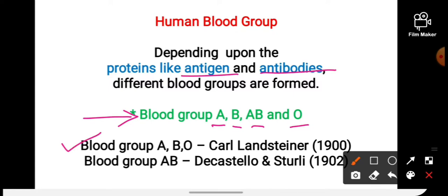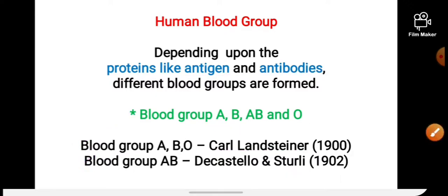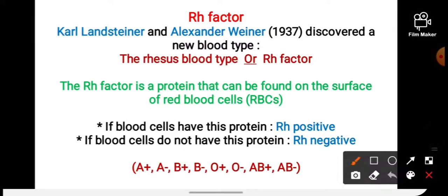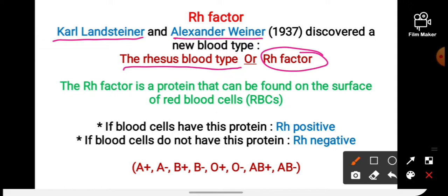The discovery of blood group AB was made by scientists De Castillo and Sterli in 1902. Another type, the RH factor, was discovered by Karl Landsteiner and Alexander Wiener in 1937. RH factor is also known as the Rhesus blood type.